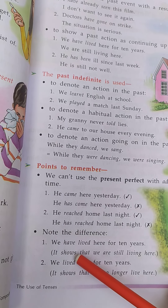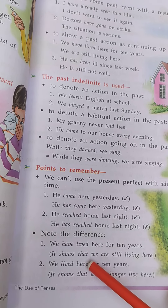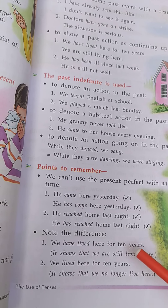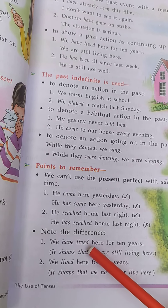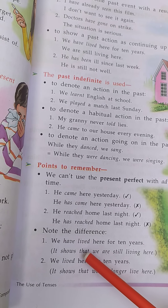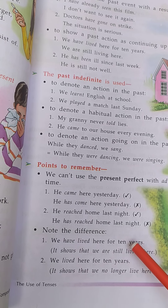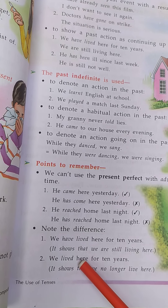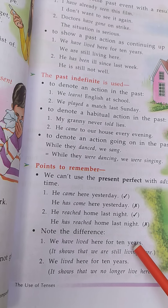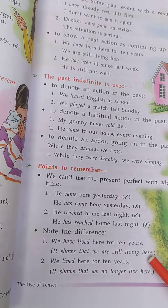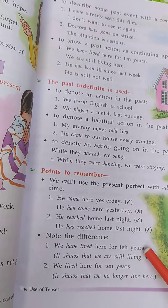Note the difference. Number one: we have lived here for 10 years. Means it shows that we are still living here. हम 10 साल से इधर रहते हैं — इसका मीनिंग है कि हम अभी भी इधर रहते हैं। इस situation में हमेशा present perfect tense यूज़ होता है।